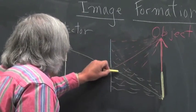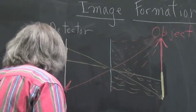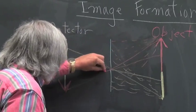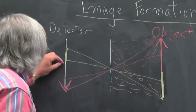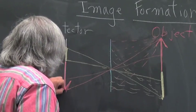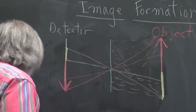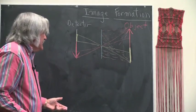And of course, all the intermediate parts of the object will also travel through the pinhole and form their appropriate place on our detector. And, lo and behold, we have an upside down image.